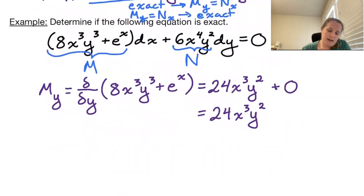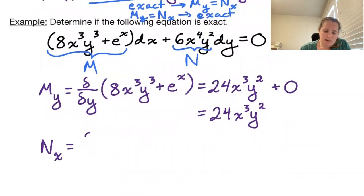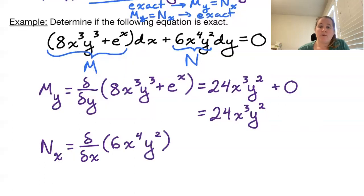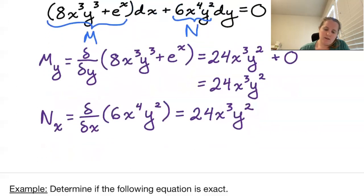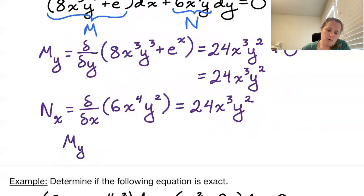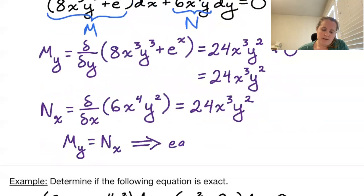Now looking at N, we want to take the partial with respect to x to get the mixed partial — dy should be paired with the partial with respect to x. Taking the partial with respect to x of 6x to the fourth y squared, we treat y squared as a constant. x to the fourth goes to 4x cubed, which gives us 24x cubed y squared. So the partial with respect to y of M equals the partial with respect to x of N, and therefore the equation is exact.